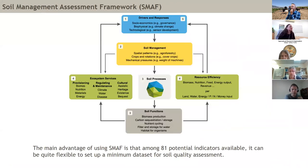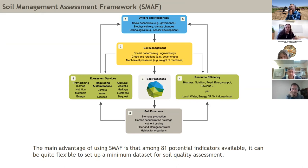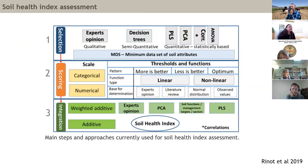Another example is the Soil Management Assessment Framework (SMAF), which is more general and can work in natural systems as well. The approach lets you select from 81 potential indicators to assess the soil and evaluate the overall function or services the soil can support. This illustrates the process of developing a soil quality index or soil health assessment.